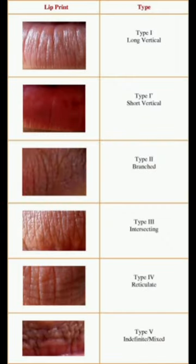According to Suchihasi's classification system, lip prints are classified into six main types, which we can see in this picture. Type 1 is long vertical — the features are very long straight grooves running vertically across the lips.